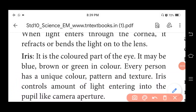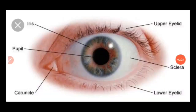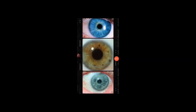Our next part is the iris. The iris is the colored part of the eye — a very important point. It may be blue, brown, or green in color. In the picture, inside the sclera there is a colored portion, and that colored portion is known as the iris. As shown, the three most common iris colors are blue, brown, and green.